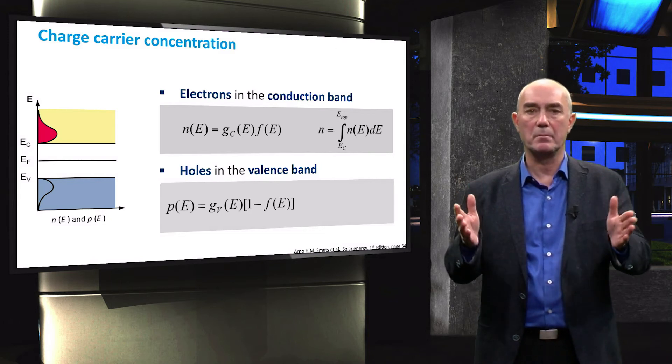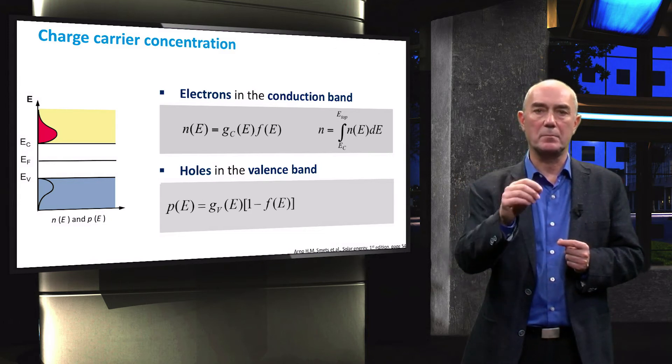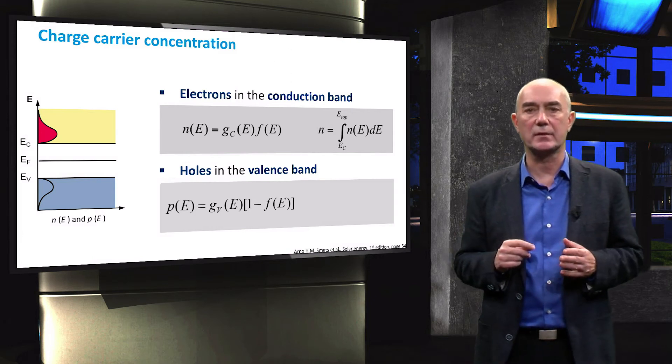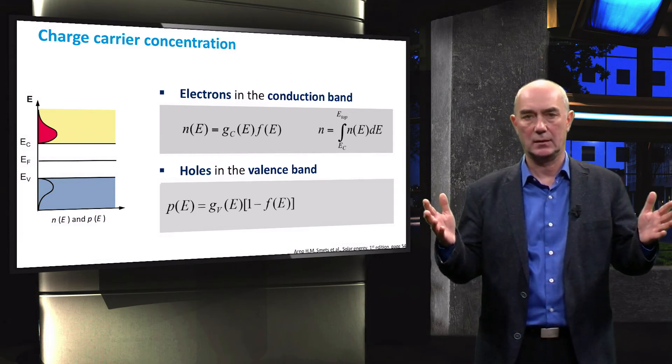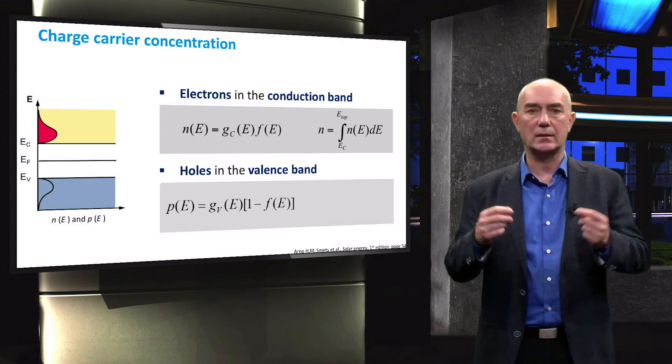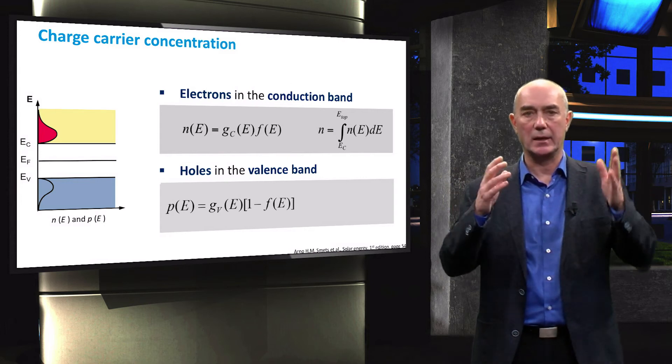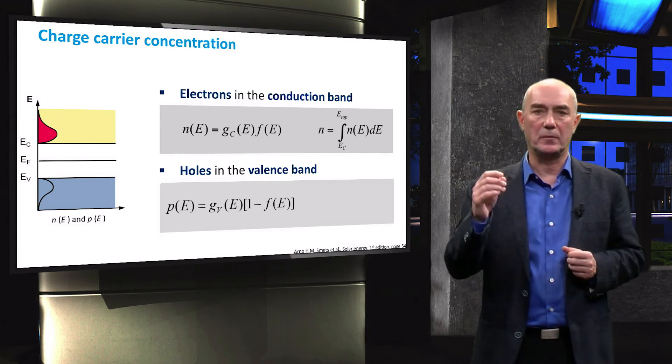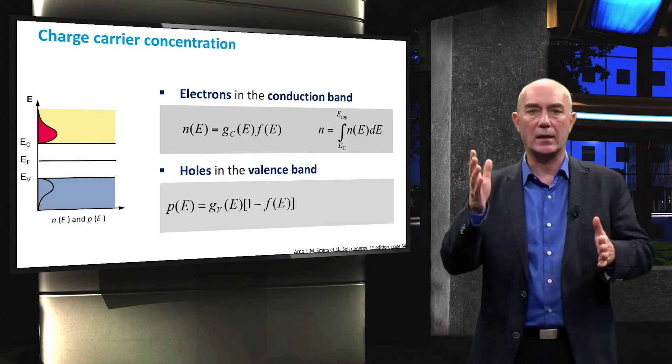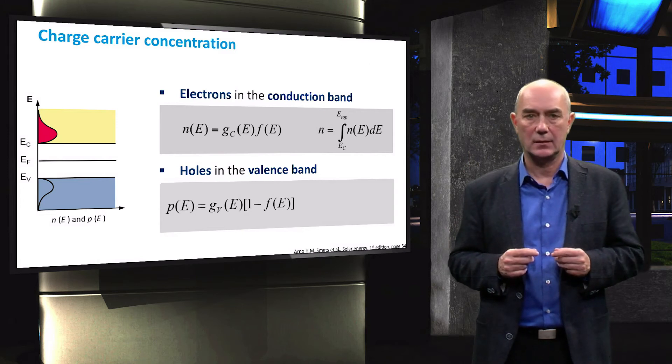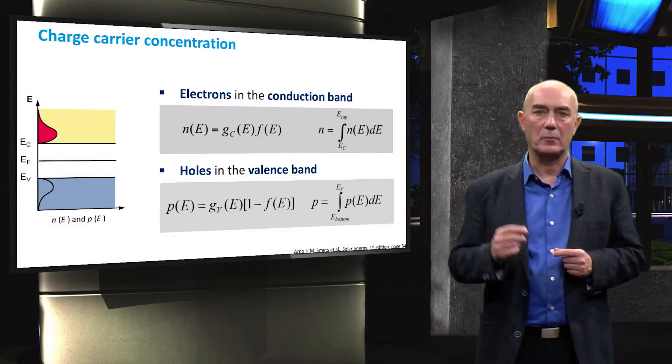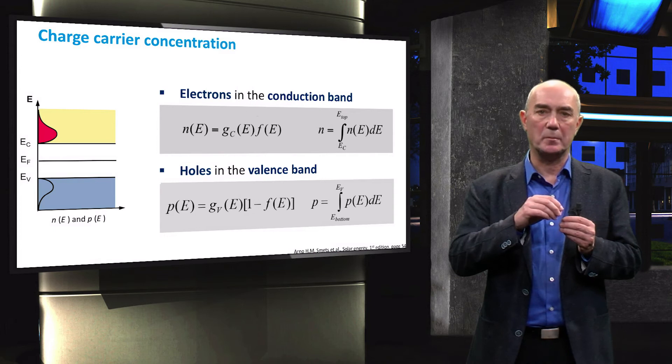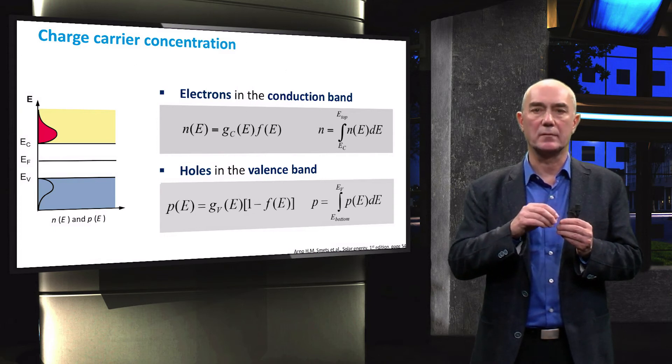However, remember that holes are simply the missing electrons at given states in the valence band. Therefore, we have to multiply the density of allowed states by one minus the occupation function to find out which states are unoccupied. Again, we can integrate this product to obtain the total number of holes in the valence band.